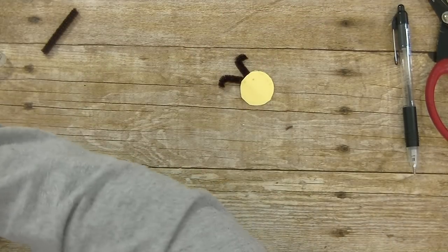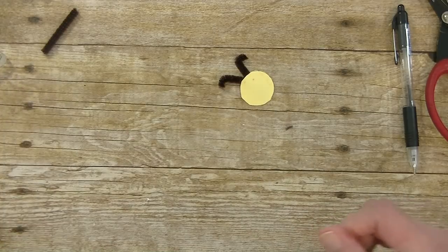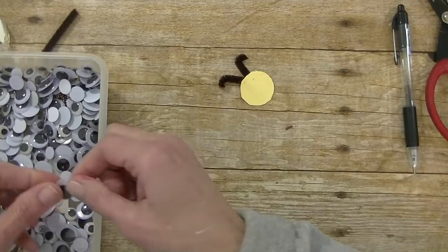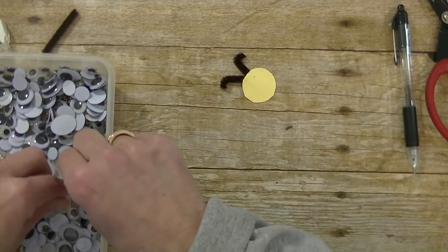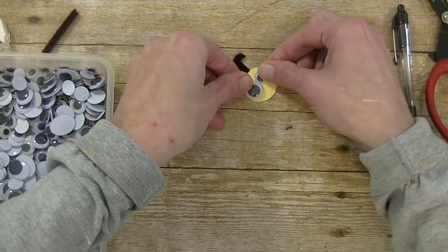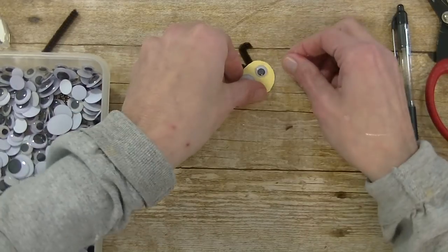Now I want to add some googly eyes. I think everything is cuter with googly eyes. All right so I got my little bucket over here. The little ones they can do like one googly eye, they can kind of be fun with it. They can do one big one, one small one. How cute would that be? I'm just going to go with the small ones.